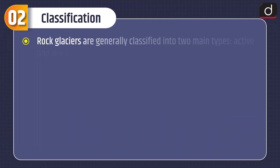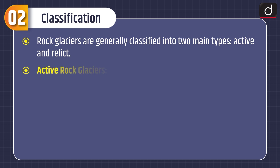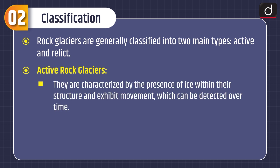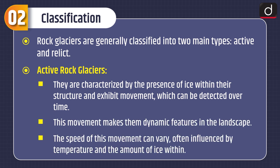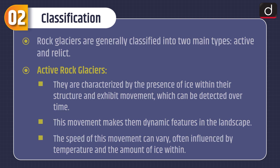Rock glaciers are generally classified into two main types: active and relict. Active rock glaciers are characterized by the presence of ice within their structure and exhibit movement which can be detected over time, making them dynamic features in the landscape. The speed of this movement can vary, often influenced by temperature and the amount of ice within.